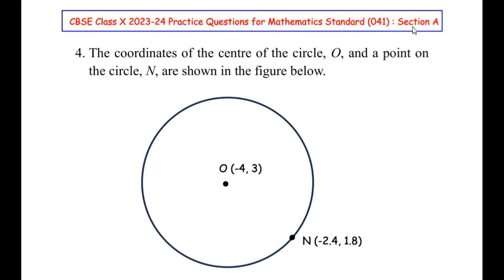This is from Section A, that is multiple choice questions of one mark each. Now this question is from the coordinate geometry chapter. The coordinates of the center of the circle O and a point on the circle N are shown in the figure below.